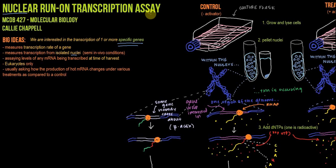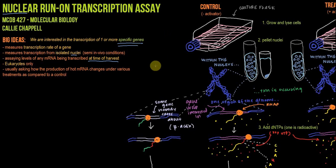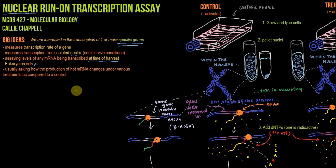This is why it's called a nuclear run-on transcription assay. Because we're using isolated nuclei, we're thinking about this in semi-in vivo conditions. What we'll be assaying is not just transcription at any given time, but the levels of mRNA being transcribed at the time of harvest. We'll take nuclei at a particular time and ask: at that time, how much transcription is happening? We're going to use radioactive NTPs and heparin to answer that question. Because we're doing something that involves the nucleus, we can only use eukaryotes. Generally, the types of questions we ask are how the production of a given mRNA changes under various treatments as compared to a control.